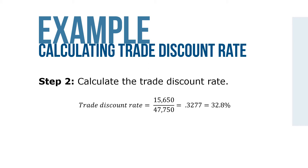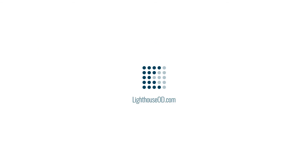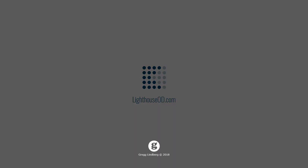Step 2: Calculate the trade discount rate. The trade discount rate equals $15,650 over the original $47,750, which equals 0.3277, or 32.8%. That covers calculating the trade discount rate when list price and net price are known.